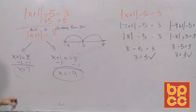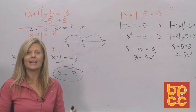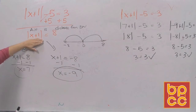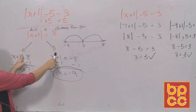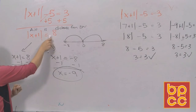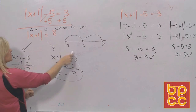To solve an absolute value equation: Step 1, isolate the absolute value — get the absolute value on the left side by itself. Once you do that, you always write it as two equations. One distance is going to be positive, one is going to be negative. Then solve both.